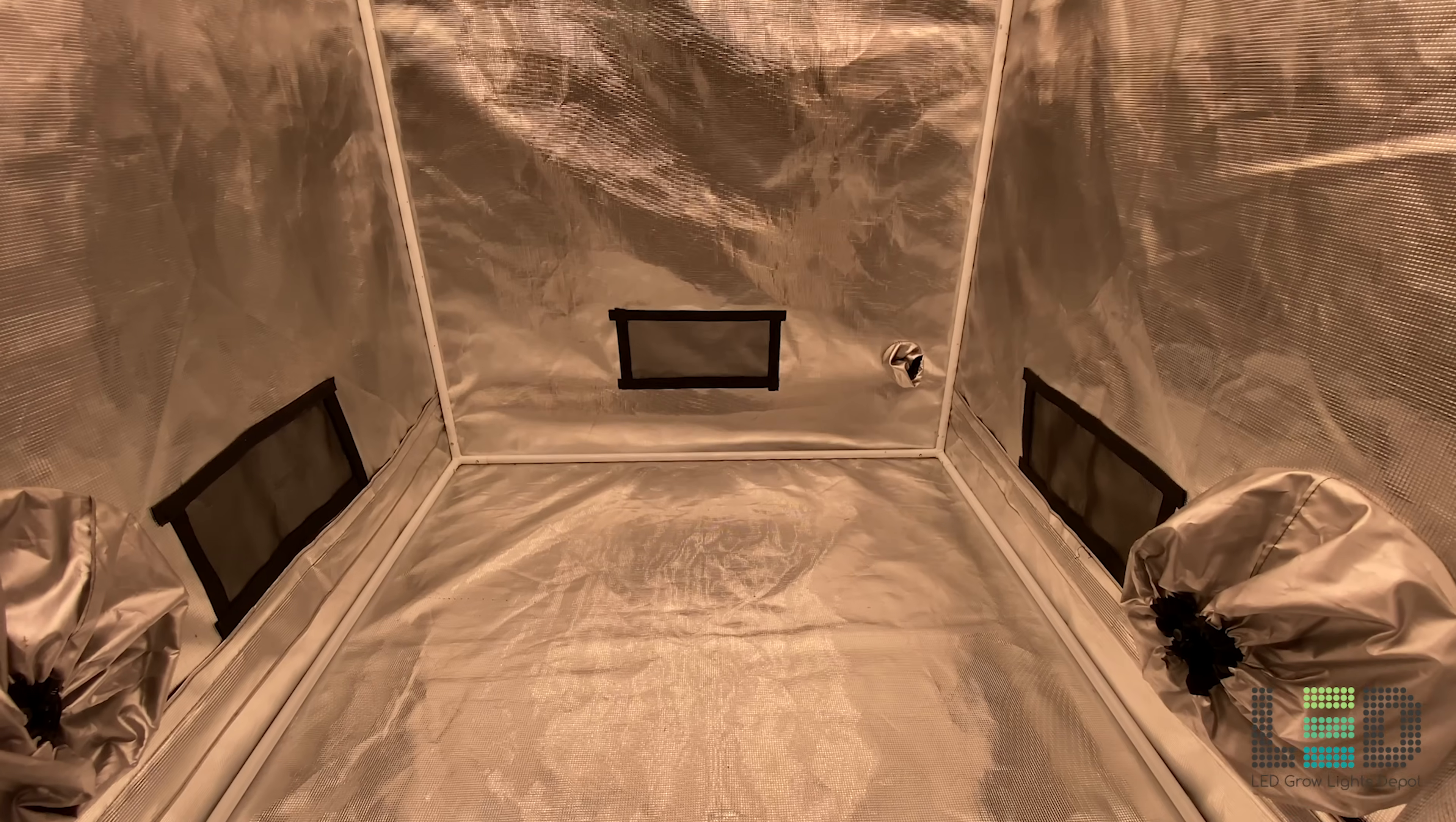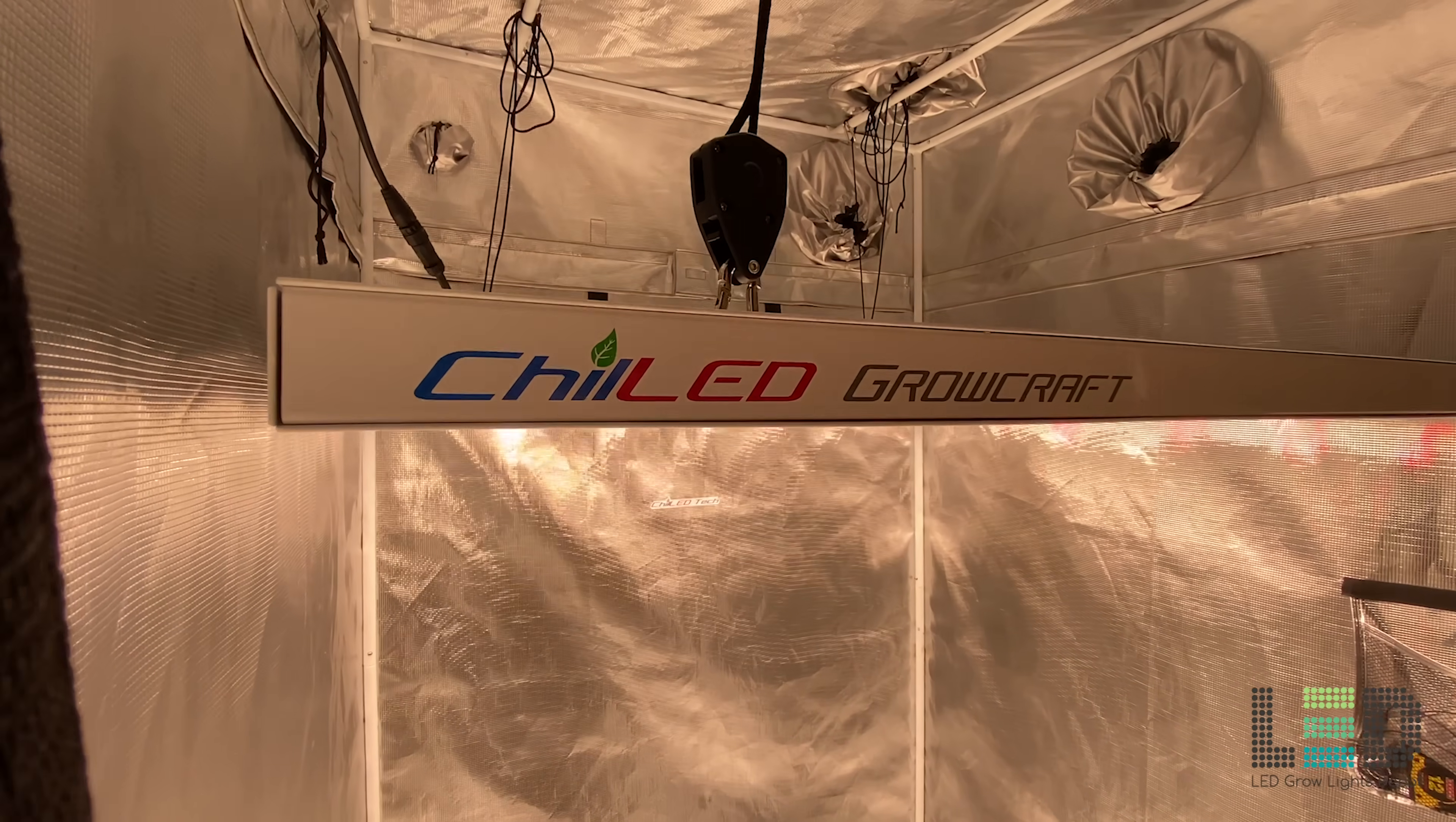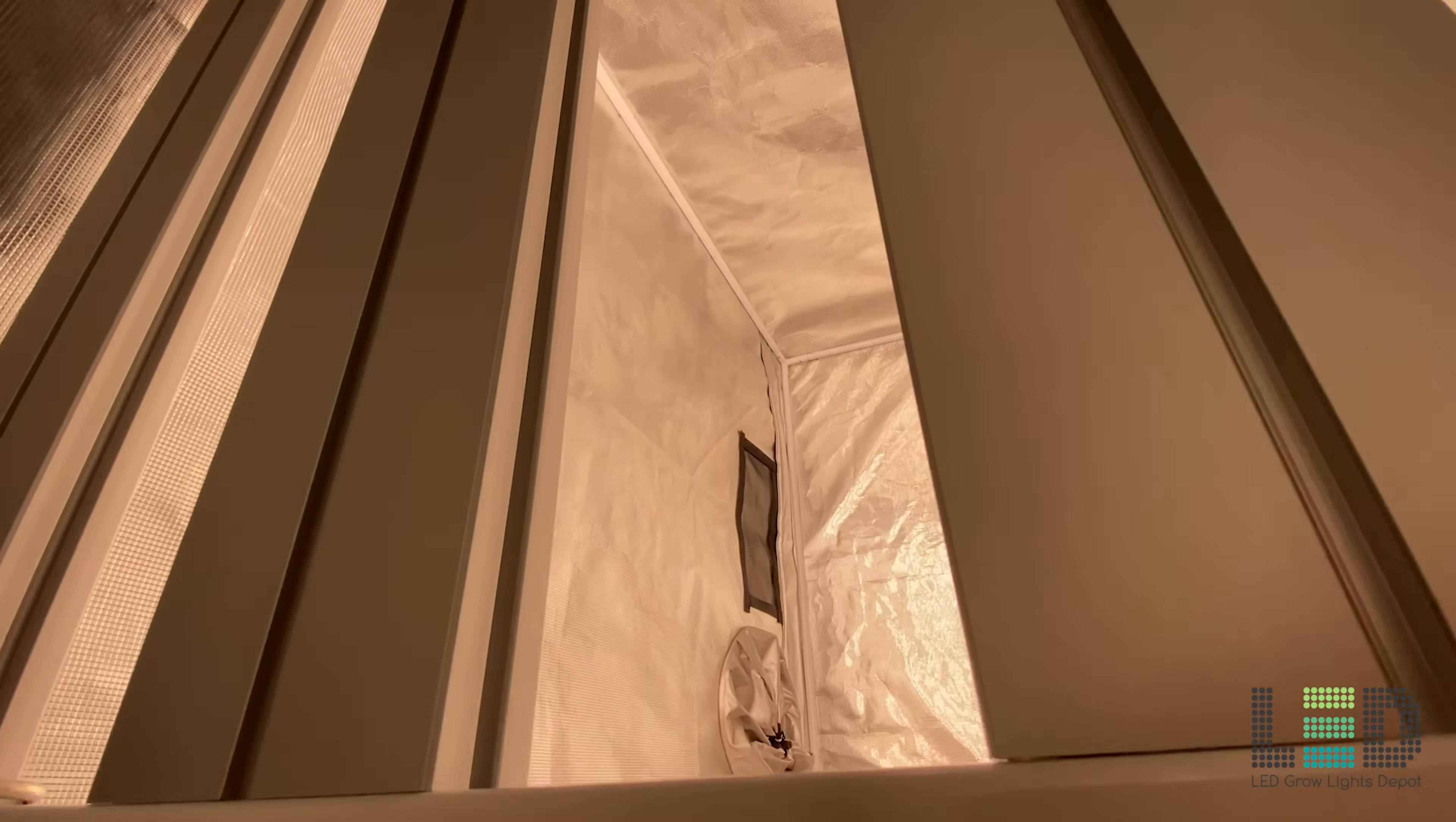The Growcraft X6 is rated for 90 to 305 volts AC and draws 600 watts at the wall according to Chill. They report an amperage draw of 5 amps at 120 volts and 2.5 amps at 240 volts. When I measured this grow light's wattage draw at the wall at 115 volts, I received a reading of 606 watts with an amperage of 5.29. Expect a heat output of 2047 BTUs per hour from this fixture.